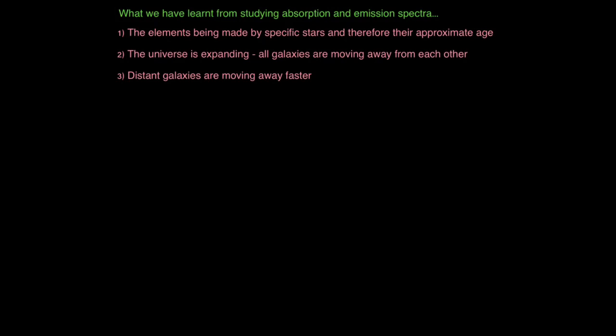So what have we learned from studying absorption and emission spectra? Well, firstly, the elements made by specific stars and therefore their approximate age. Secondly, we've worked out that the universe is expanding and all galaxies are moving away from each other. And thirdly, and do take note with this point because it does come up in exams, distant galaxies are moving away faster. I haven't explained that. Take a look at this.